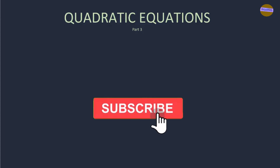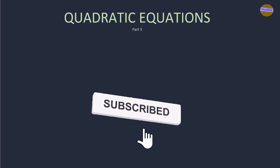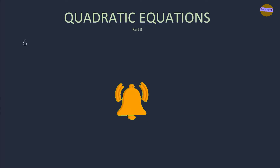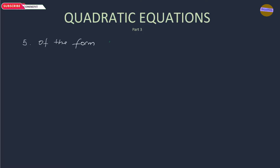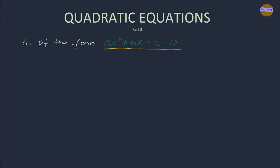Hi, welcome back to Map Without Frills. Now we're going to discuss the fifth method of solving a quadratic equation of the form ax² + bx + c = 0, which is the standard form of the quadratic equation. This method is called completing the square.